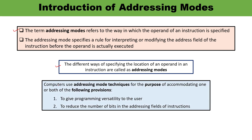Computers use addressing mode techniques to accommodate one or both of the following provisions: first, to give programming versatility to the user — by providing facilities such as pointers to memory, counters for loop control, and indexing for data and program relocation. Second, to reduce the number of bits in the addressing fields of the instruction. Either one or both provisions can be taken into consideration.